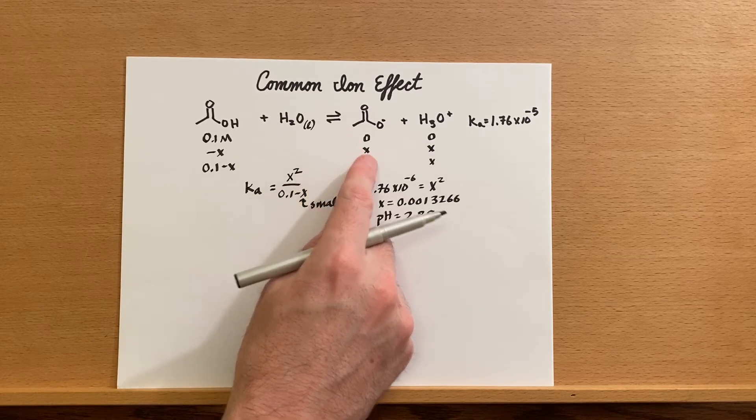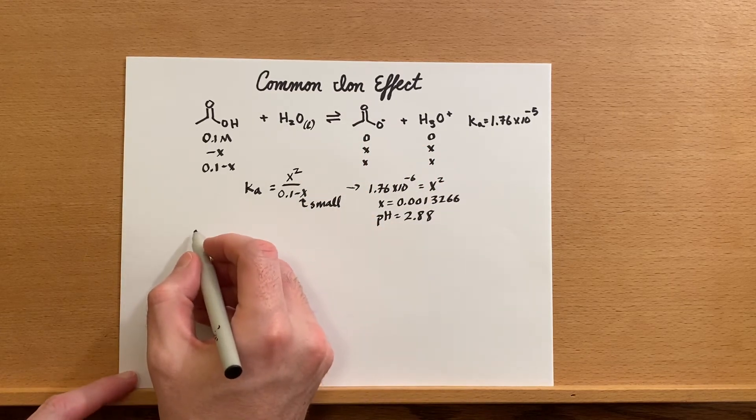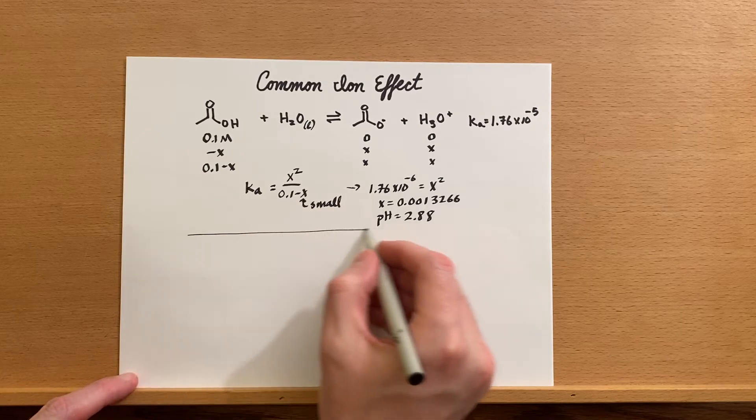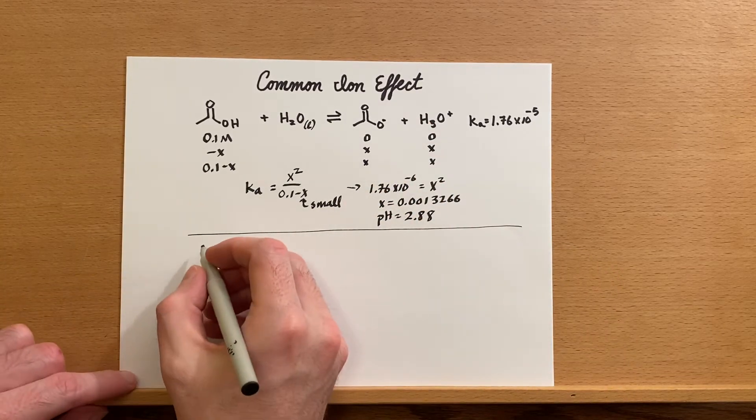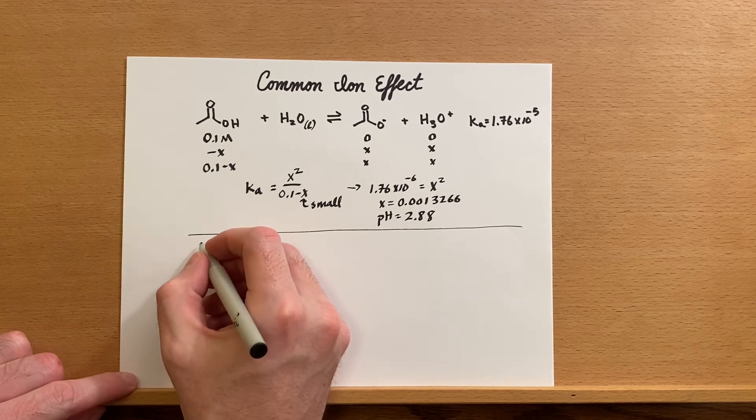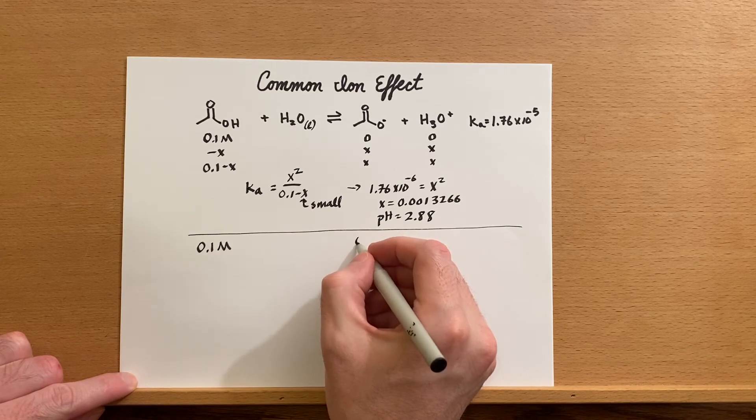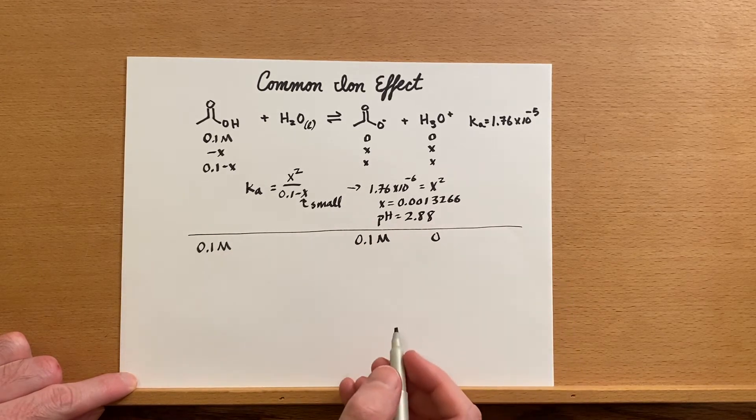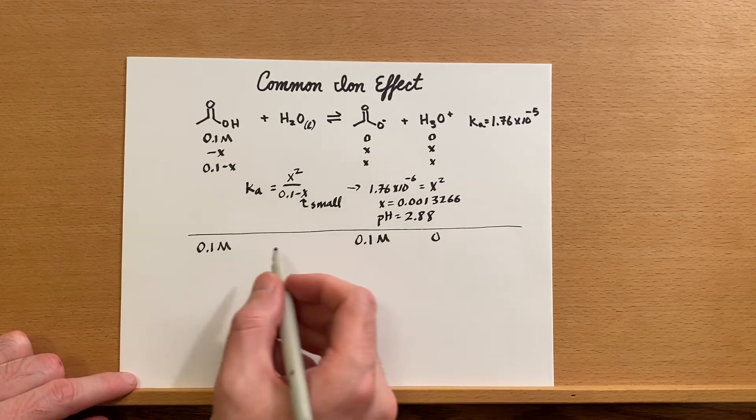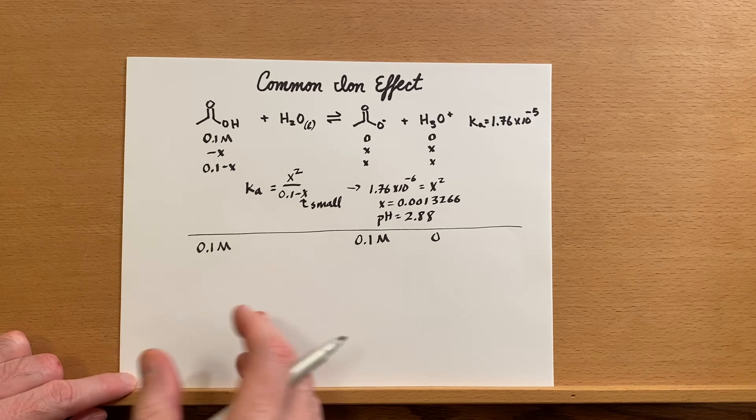Well, that will change my initial condition on the ICE table. I'm going to write that just down here using the same reaction. We'll just write another ICE table right here. So these are now our initial conditions and we'll fill in the rest of the ICE table the same as we did up here.